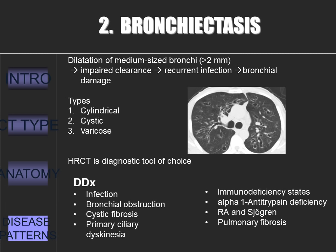Bronchiectasis is the abnormal dilatation of the medium-sized bronchi greater than 2 mm in diameter, caused by the destruction of the muscular and elastic components of bronchial walls. The proximal bronchi are less affected because they have more cartilage. Damage is caused by either infectious or inflammatory cytokines. These bronchi can't clear secretions, which leads to further colonization and infection with pathogens, further purulent expectoration, and further bronchial damage. Thus, bronchiectasis is a cycle of bronchial damage, bronchial dilatation, impaired clearance of secretions, recurrent infection, and more bronchial damage.